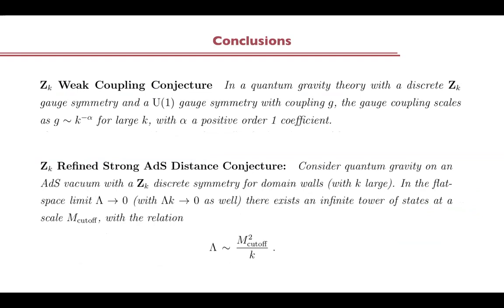My conclusions are the ones I mentioned before. We have two conjectures which are relevant when you have a large-order discrete gauge symmetry in your theory — either for one-forms, that is when you have Z_K charged particles, or for three-forms, that is when you have Z_K charged domain walls. I hope you enjoyed these two conjectures — profit from them, test them, and let us know whether they are right or wrong. Thanks a lot.